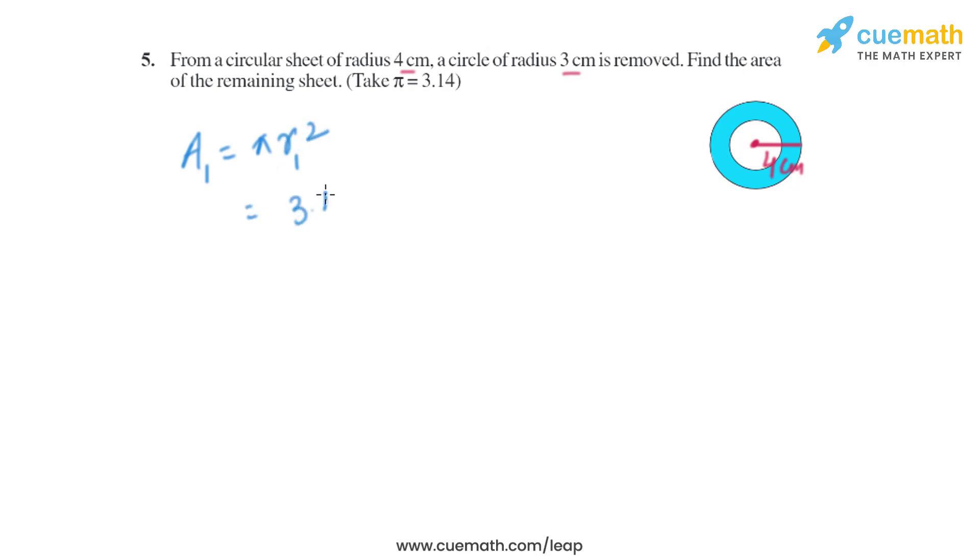So π = 3.14 and the radius is 4 cm, so it will be 4². On solving this, we get 3.14 × 16 which equals 50.24 cm². So that is the area